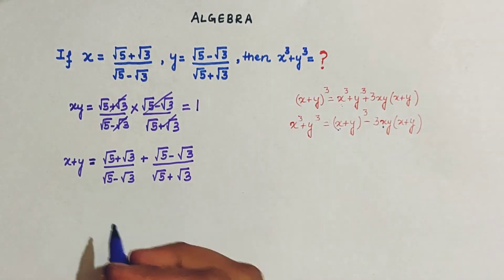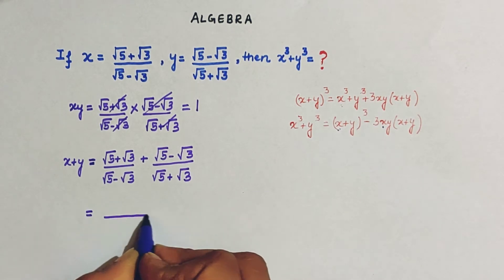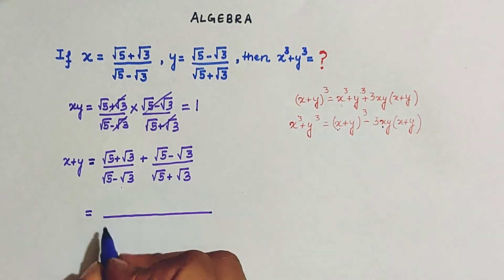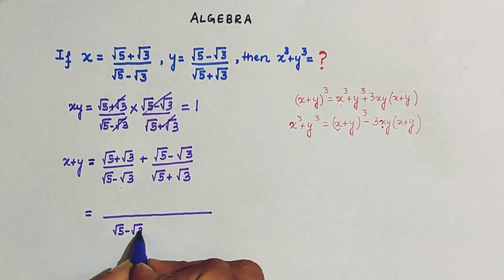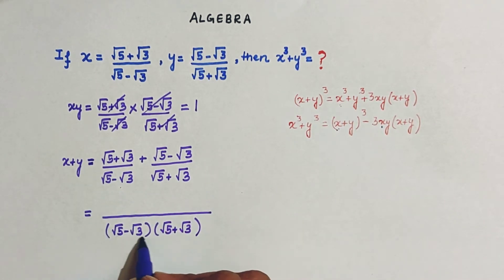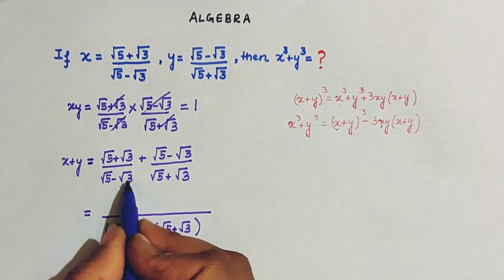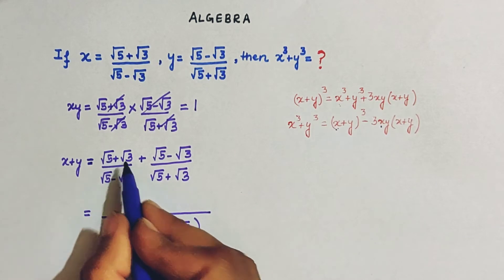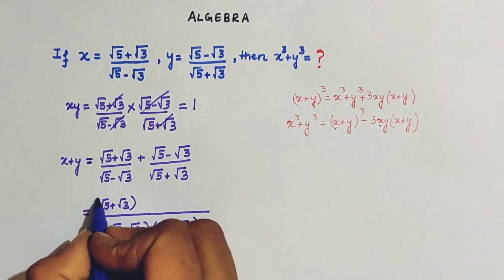Now, sum find करेंगे, तो आप क्या कीजिए? First of all, आप LCM लीजिए, LCM क्या हो जाएगा? इन दोनों denominators का product, right? अब first term लिखने के लिए, आप इस LCM को divide करिए denominator से जो भी answer आए, उसको numerator से multiply कीजिए. So this will be this square, plus similarly इस term के लिए.